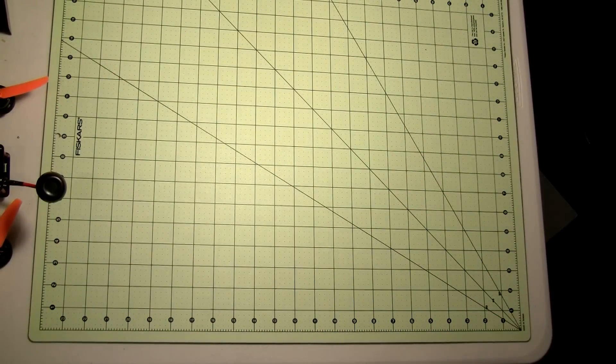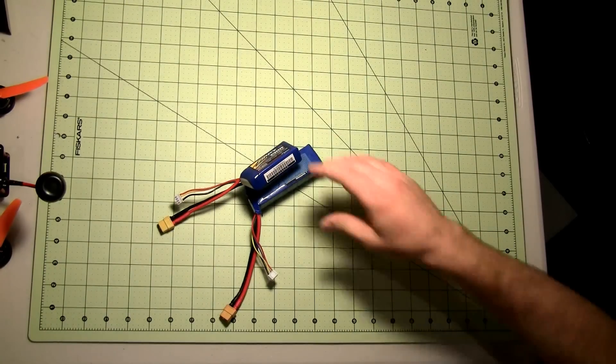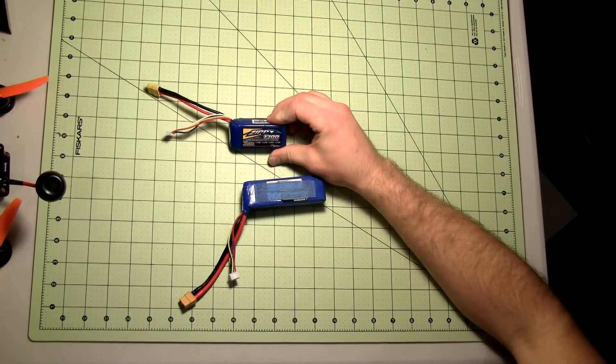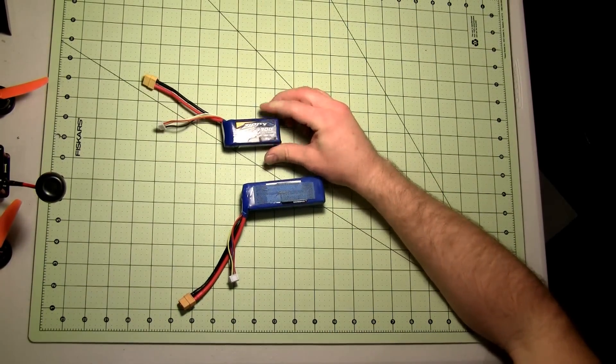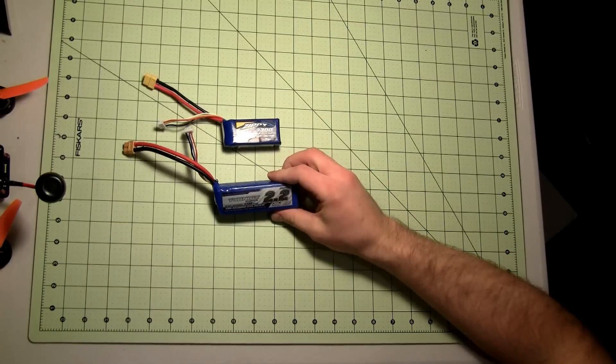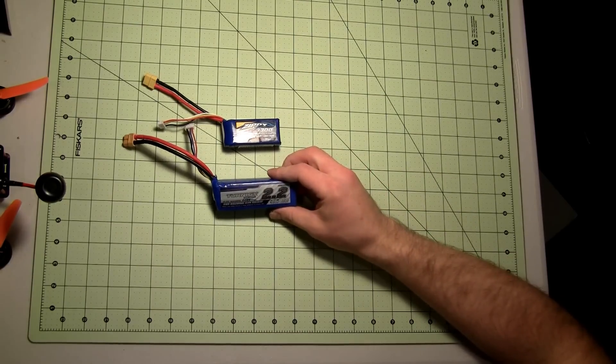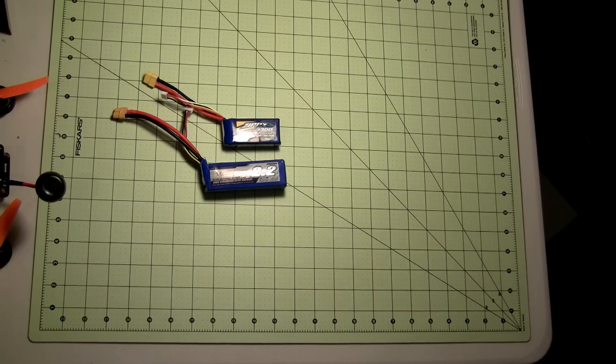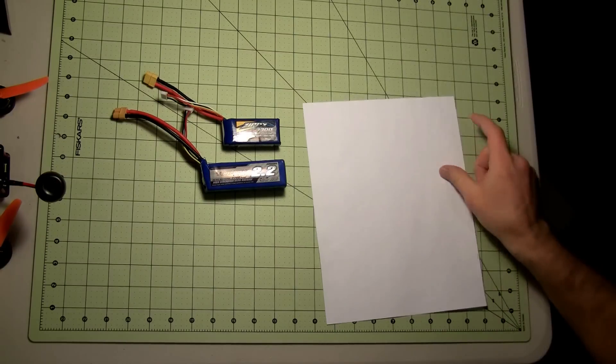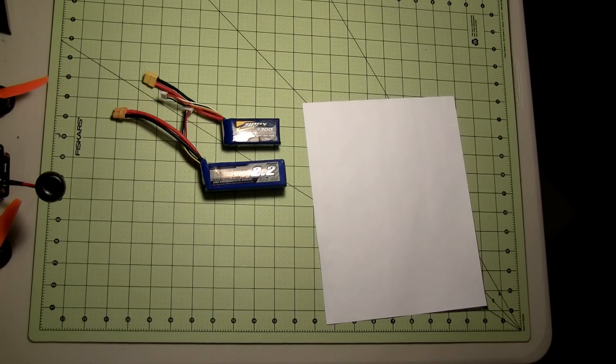So here's an example. I've got two batteries here: a 1300mAh 20C Zippy FlightMax and a 20 to 30C discharge 2100 Turnigy. Now let me talk about the attributes of these.